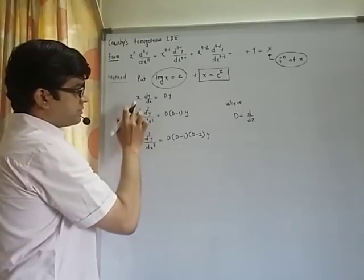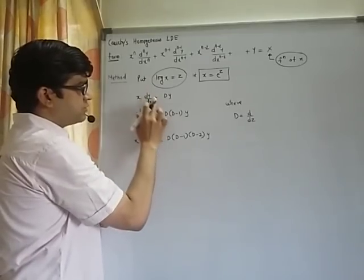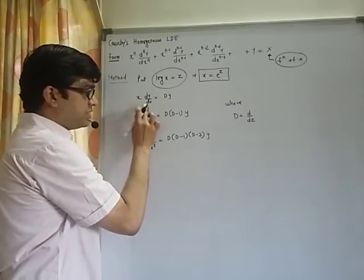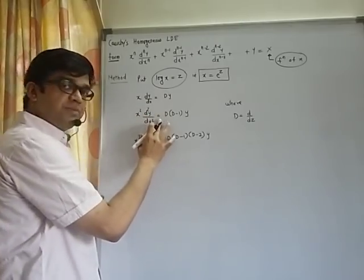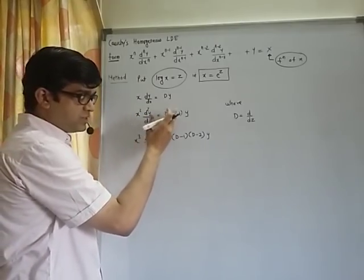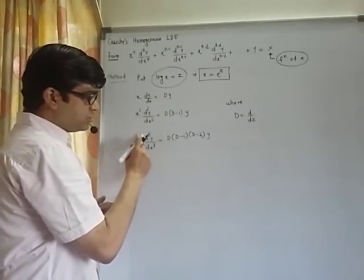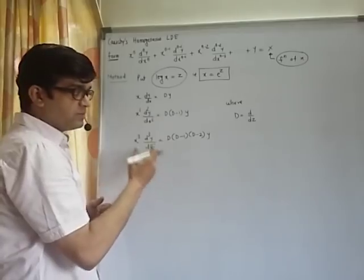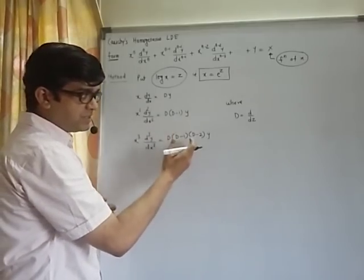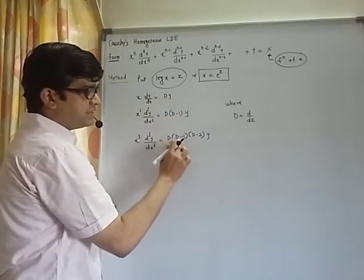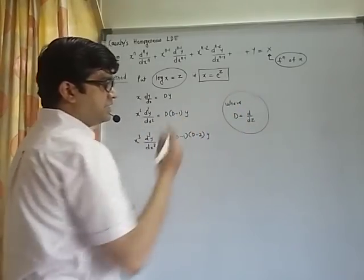These derivative terms, x into dy by dx will be replaced by dy. x square into d2y by dx2 will be replaced by d into d minus 1 into y. x cube into d cube y by dx cube will be replaced by d into d minus 1 into d minus 2 into y and so on, where capital D is nothing but d by dz.